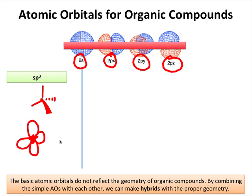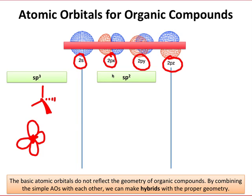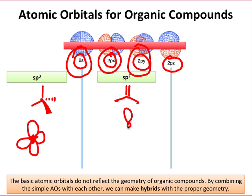Say we only needed three electron pair domains around an atom. In that case, we would use what's called sp2 hybridization, where now instead of taking all three p orbitals, we only take two of the p orbitals along with the s. That would lead to an orbital set that would look something like this.